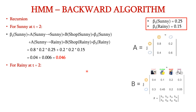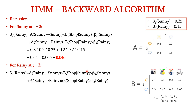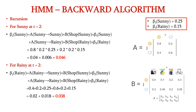Similarly, for the hidden state rainy at time step t=2: beta_2(rainy) = a(rainy→sunny) × b(shop|sunny) × beta_3(sunny) + a(rainy→rainy) × b(shop|rainy) × beta_3(rainy). Substituting: 0.4 × 0.2 × 0.25 + 0.6 × 0.2 × 0.15 = 0.038. So beta_2(rainy) = 0.038.